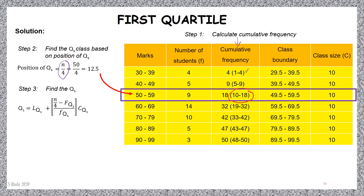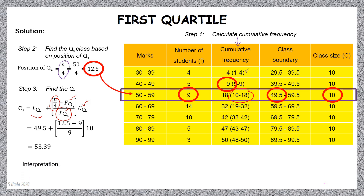Calculate Q1 using the formula. LQ1 means lower class boundary of Q1 class. Position is substituted as 12.5. FQ1 means cumulative frequency before Q1 class, which is 9. Next is the frequency of Q1 class. And C is the class size of Q1 class. Substituting all values, the final answer is Q1 equal to 53.39.